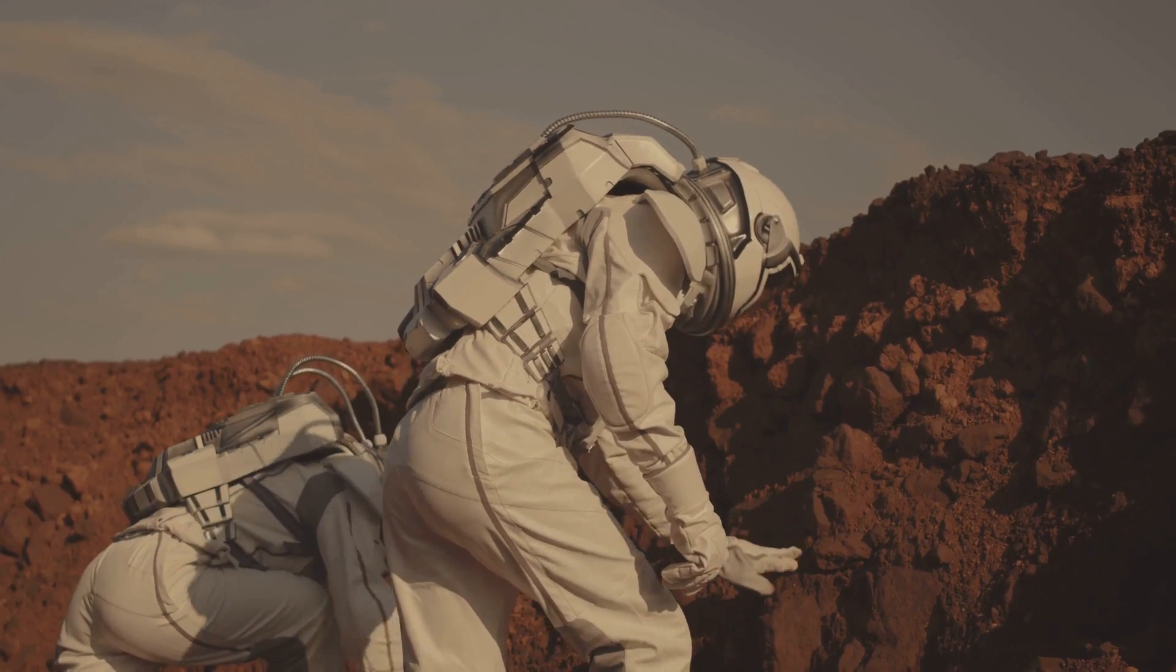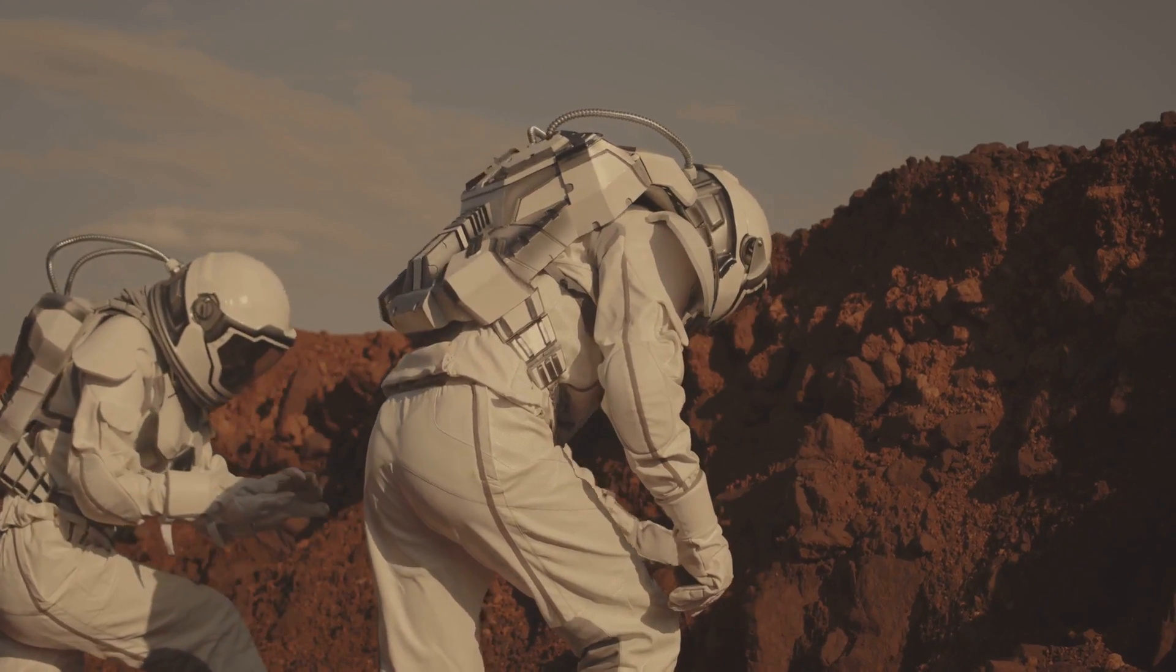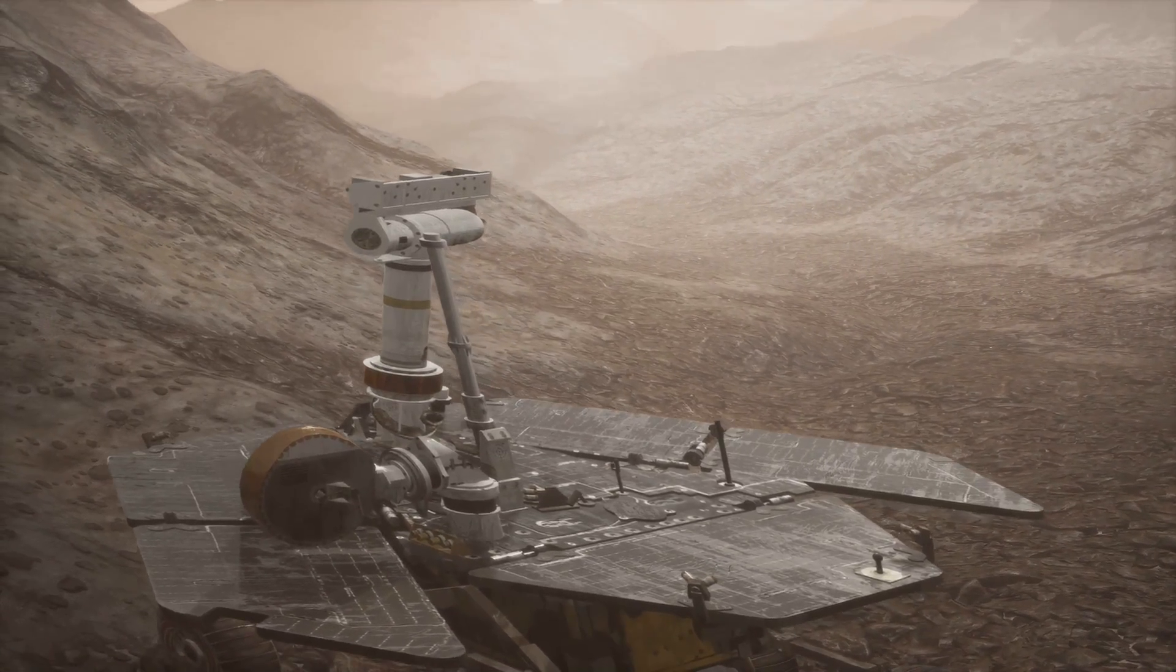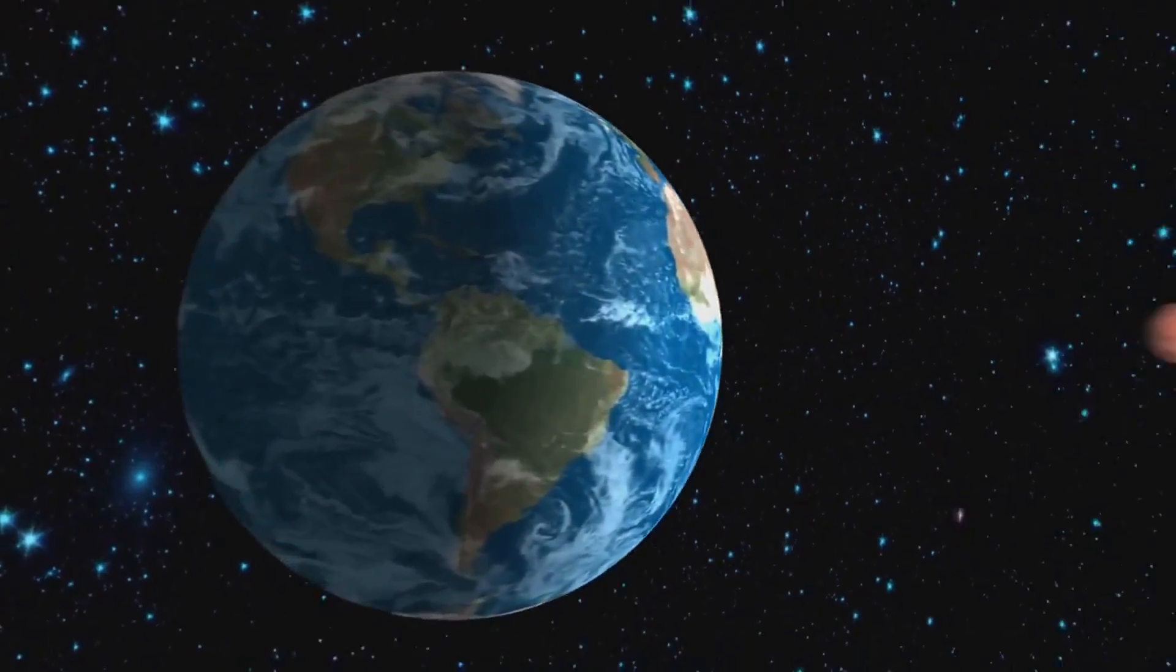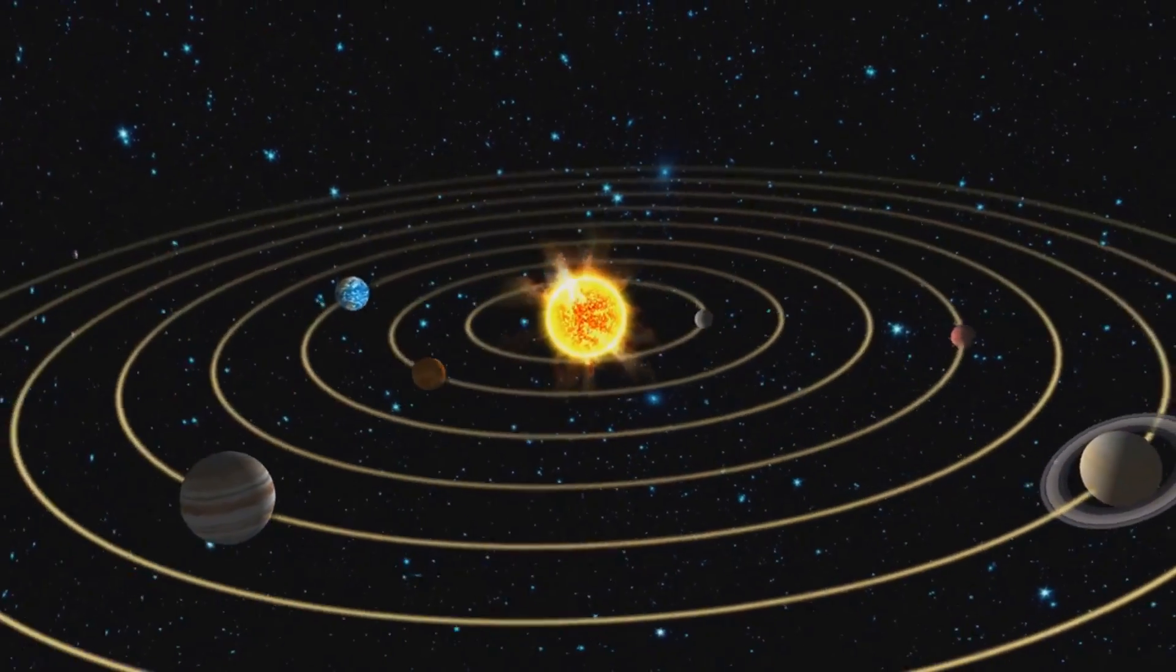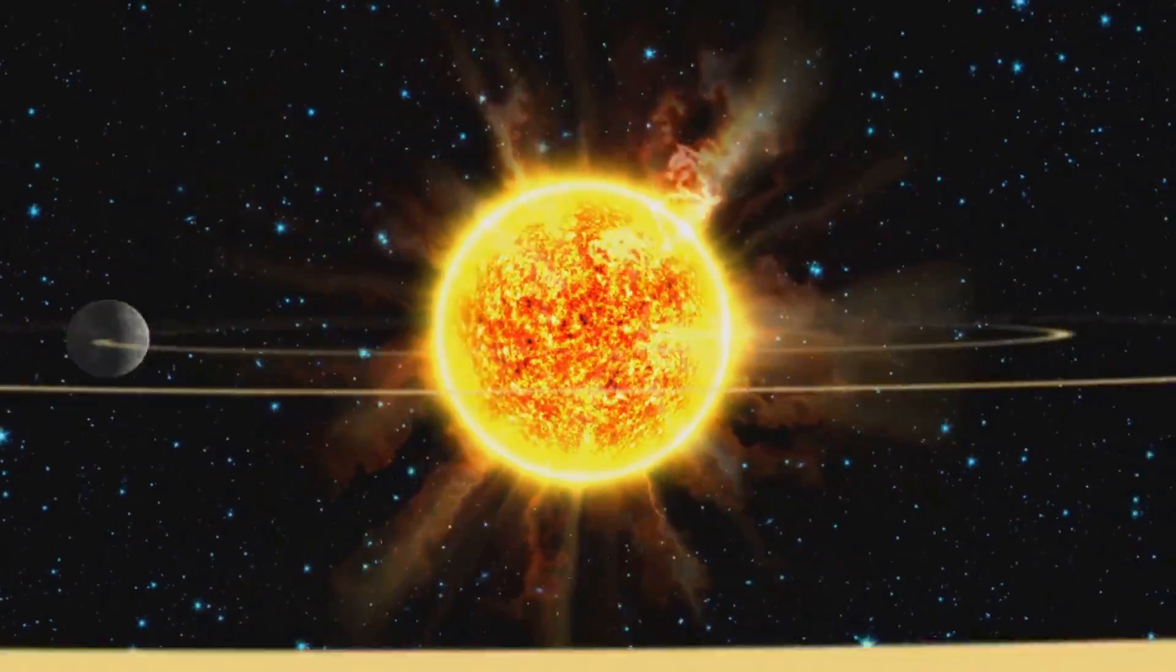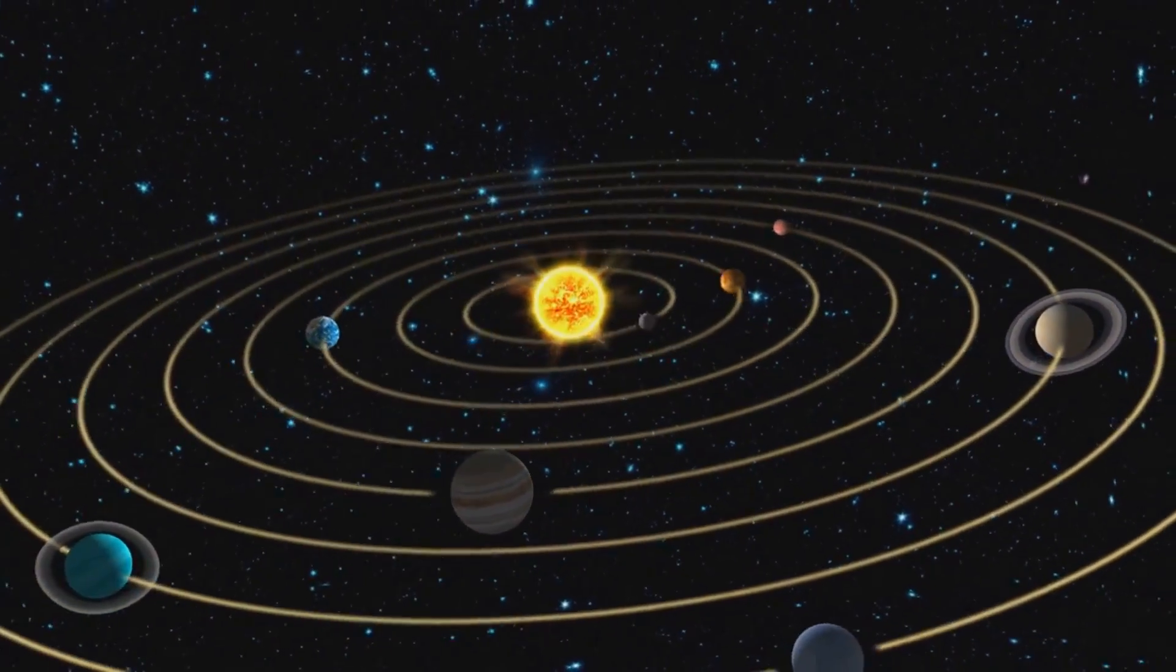So, why does this matter? Well, understanding Mercury's shrinking size helps us learn more about the planet's history and its geological activity. It also provides insights into how rocky planets like our own might evolve over time. In the grand scheme of the universe, Mercury's shrinking size might seem like a small detail, but it's these small details that help us piece together the larger puzzle of our solar system. Mercury's shrinking size is yet another captivating facet of this enigmatic planet.